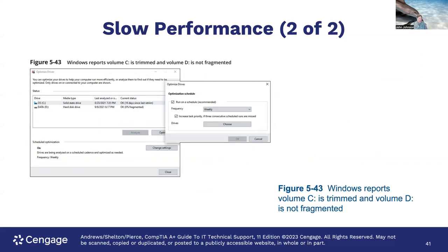Here are examples of optimizing drives — Windows reports the volume C is trimmed and volume D is not fragmented. Defragmenting a drive compacts files: if files are spread all over the disk, defragmentation puts them together so there's less jumping around when reading from the disk.